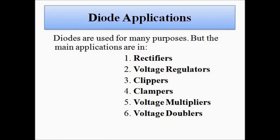Next we have clippers. As the name suggests, clippers are generally used to cut out or remove a certain portion of a signal waveform. Then we have clampers — clamper circuits are used to raise the voltage level of a signal. Then we have voltage multipliers and voltage doubler circuits, which are basically used for amplification of the signal waveform. These are some of the applications of the PN junction diode, which we will be discussing in separate videos in detail.